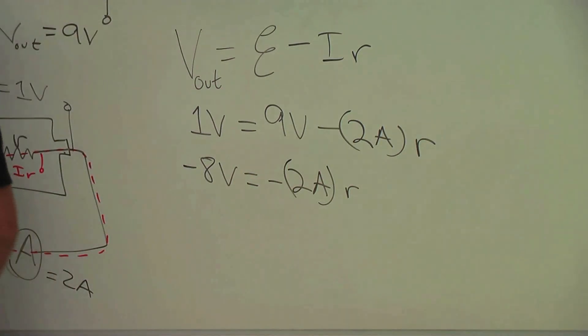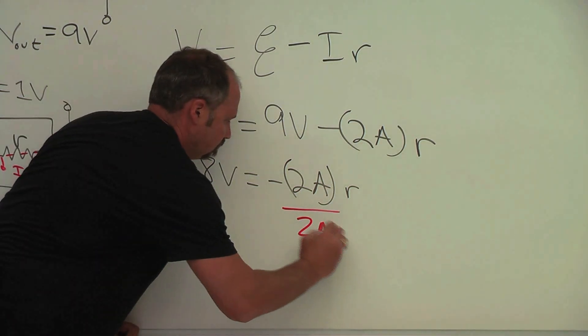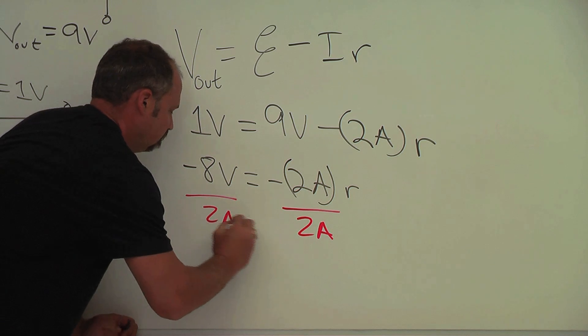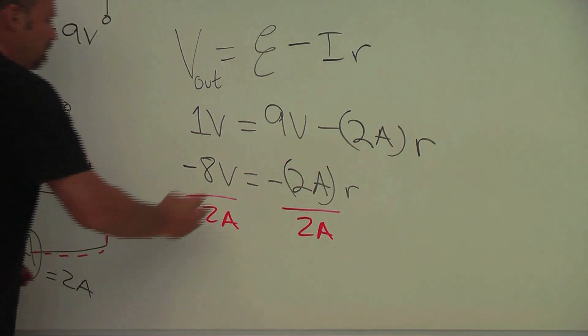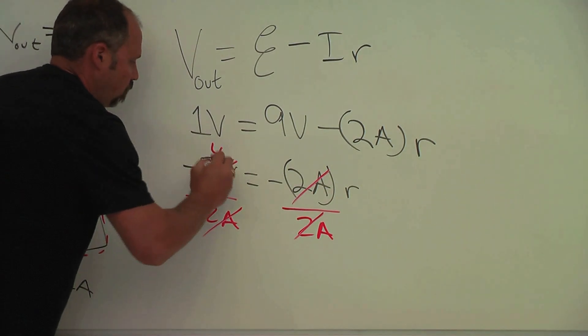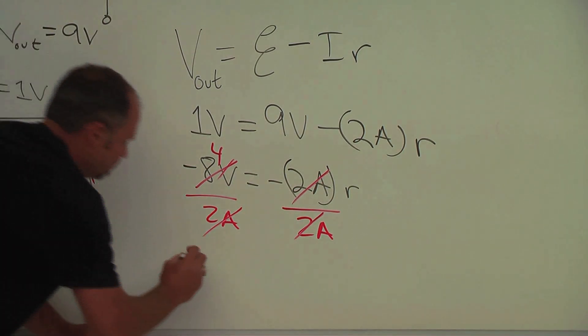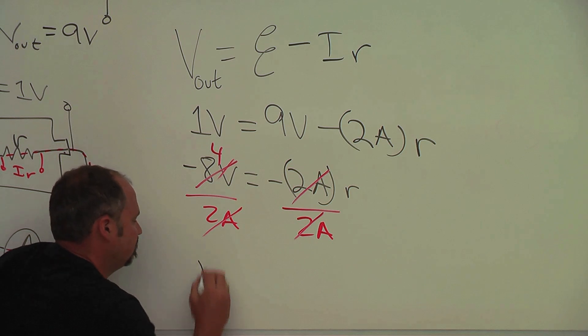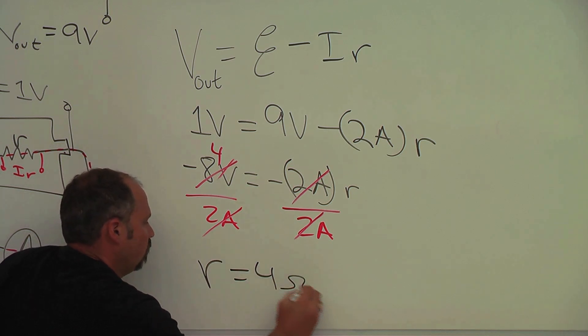And now we just divide both sides by the 2 amps. And you see what happens. This becomes a 4, and we get the internal resistance is equal to 4 ohms.